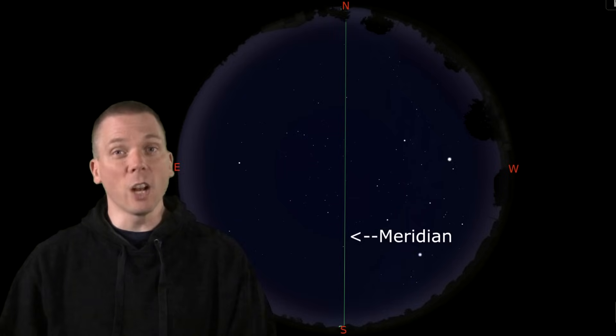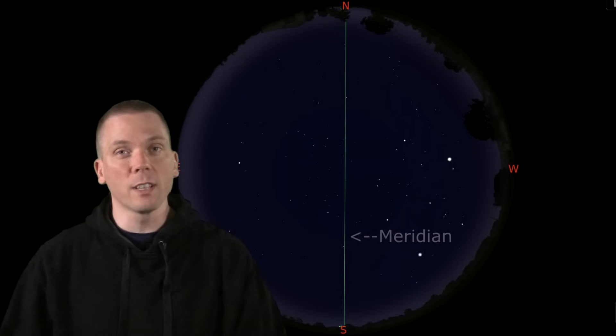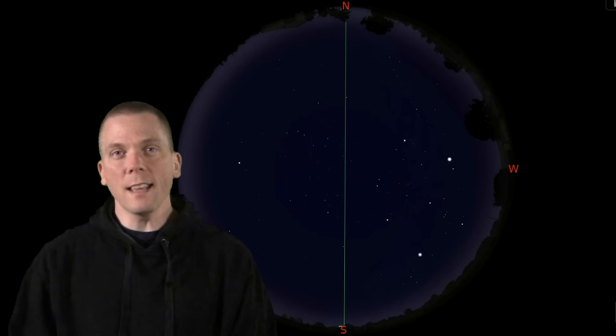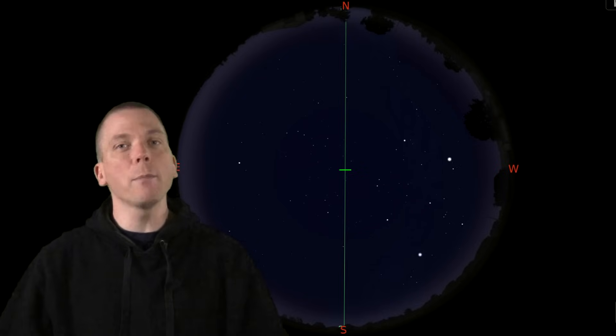This line never moves, because it always divides the sky from north to south. Now if we locate the exact halfway point of the meridian, we're looking directly overhead, and that point in the sky is known as the zenith.